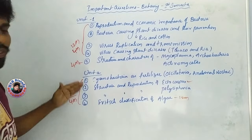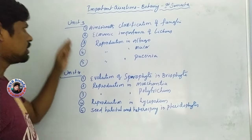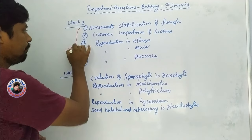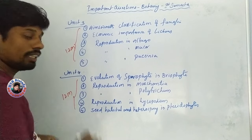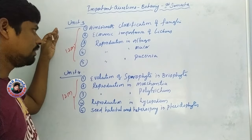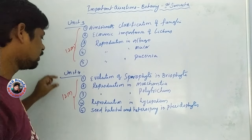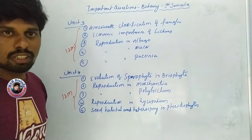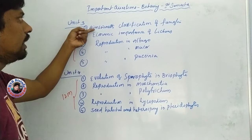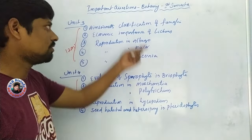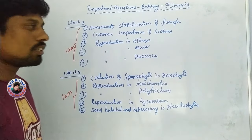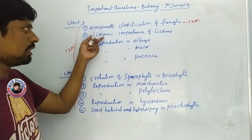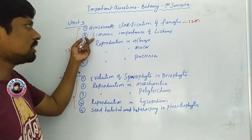Now we will cover Unit 3 and Unit 4. We have 4-mark questions in these units as well. There are class-level questions from these units. The economic importance of lichens is a 2-mark question.